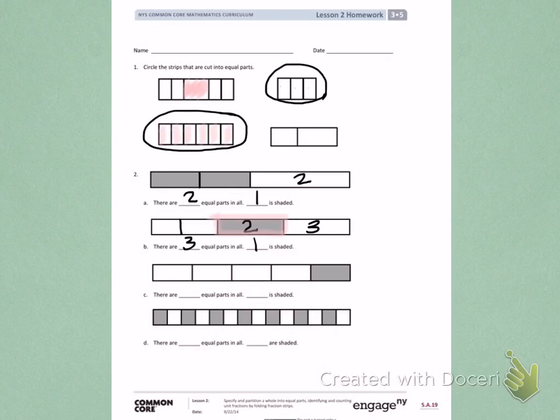Continue this process for C and D. Counting in total how many equal parts there are, and then labeling how many parts are shaded.